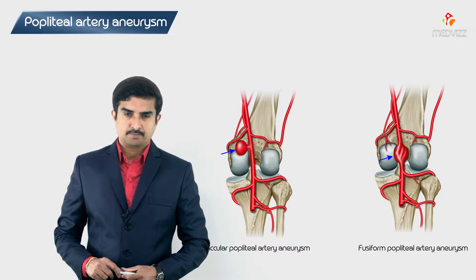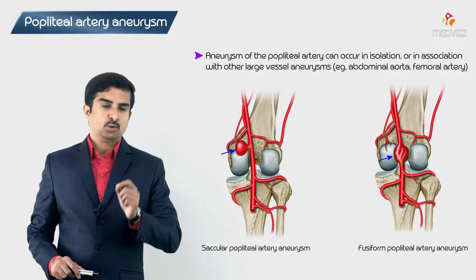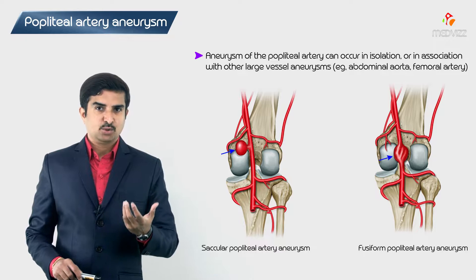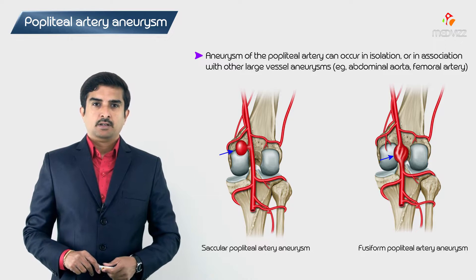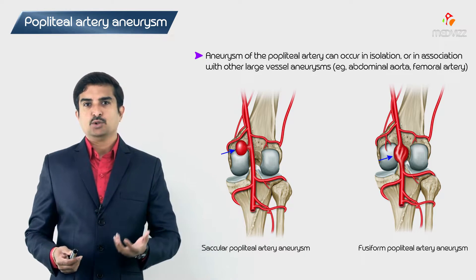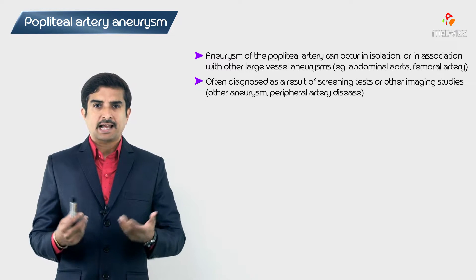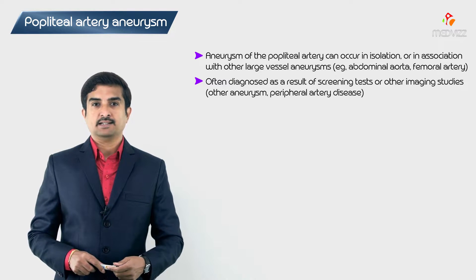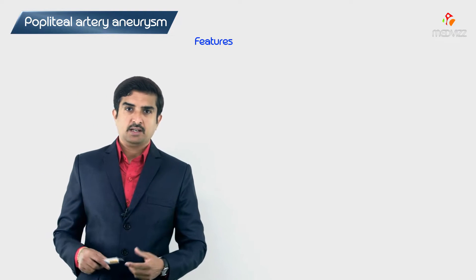Popliteal artery aneurysms can occur in isolation or may be associated with other large vessel aneurysms like abdominal aortic aneurysms or femoral artery aneurysms. Generally, these popliteal artery aneurysms are often diagnosed as a result of screening tests or other imaging studies in patients who do not have obvious symptoms of vascular disease.